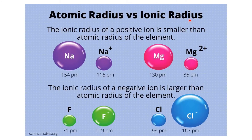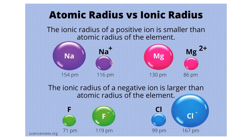Ionic radius is the radius of an ion. Comparing atomic and ionic radius: sodium has 11 protons and 11 electrons. When it loses one electron to form Na⁺, it has 11 protons but only 10 electrons. Now the electrons experience stronger attraction from the nucleus since protons outnumber electrons, so the ion contracts. That is why positively charged ions are smaller than the corresponding neutral atom.